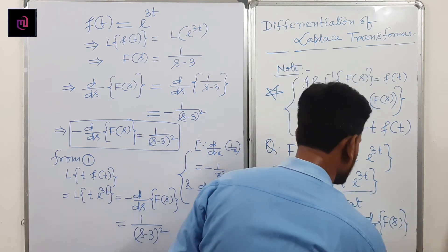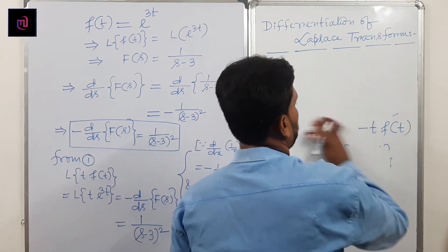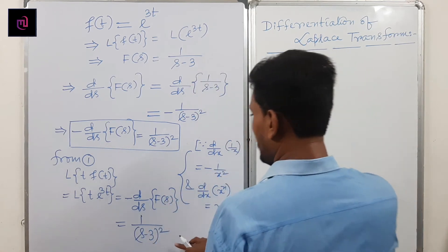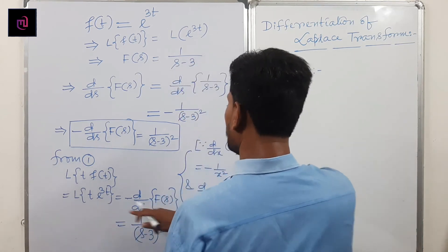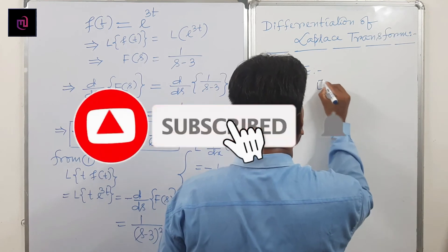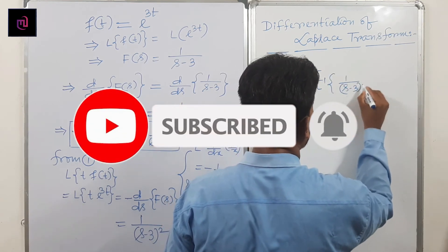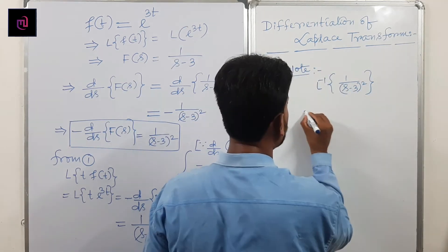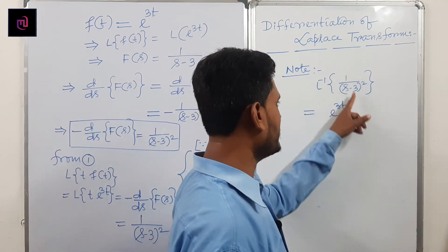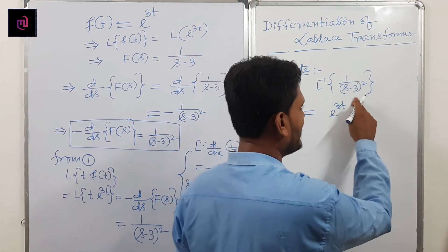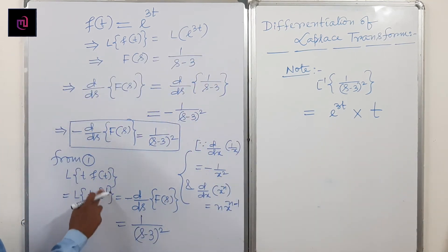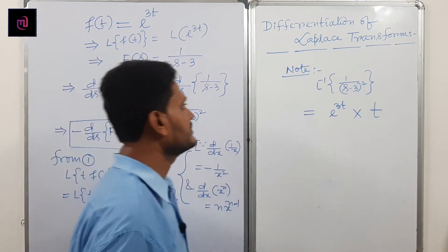If we use the first shifting theorem directly on t·e^(3t), we get the answer directly. Also, Laplace inverse of 1/(s−3)² — since 1/(s−3) corresponds to e^(3t), and replacing s by (s−3) in 1/s² gives 1/(s−3)², which corresponds to t·e^(3t). Same answer.